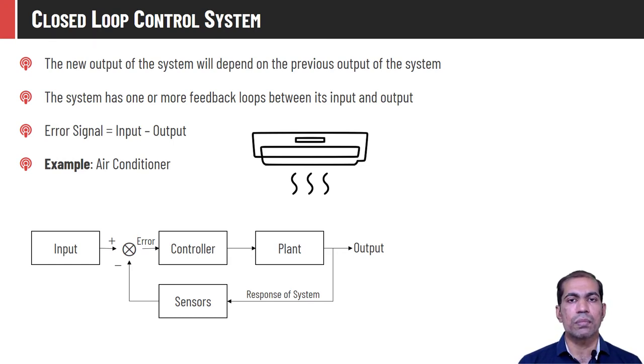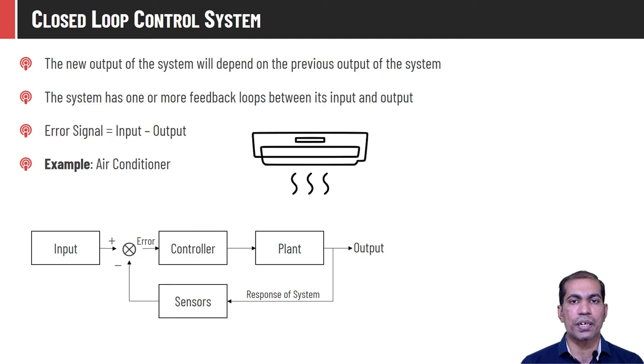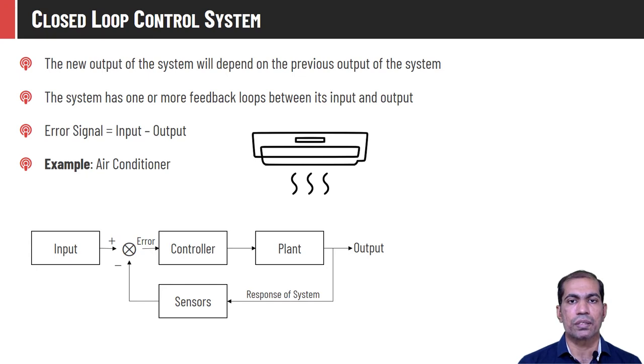A closed loop control system has a feedback mechanism — whatever output is generated is given back to the system and it tunes the parameters.